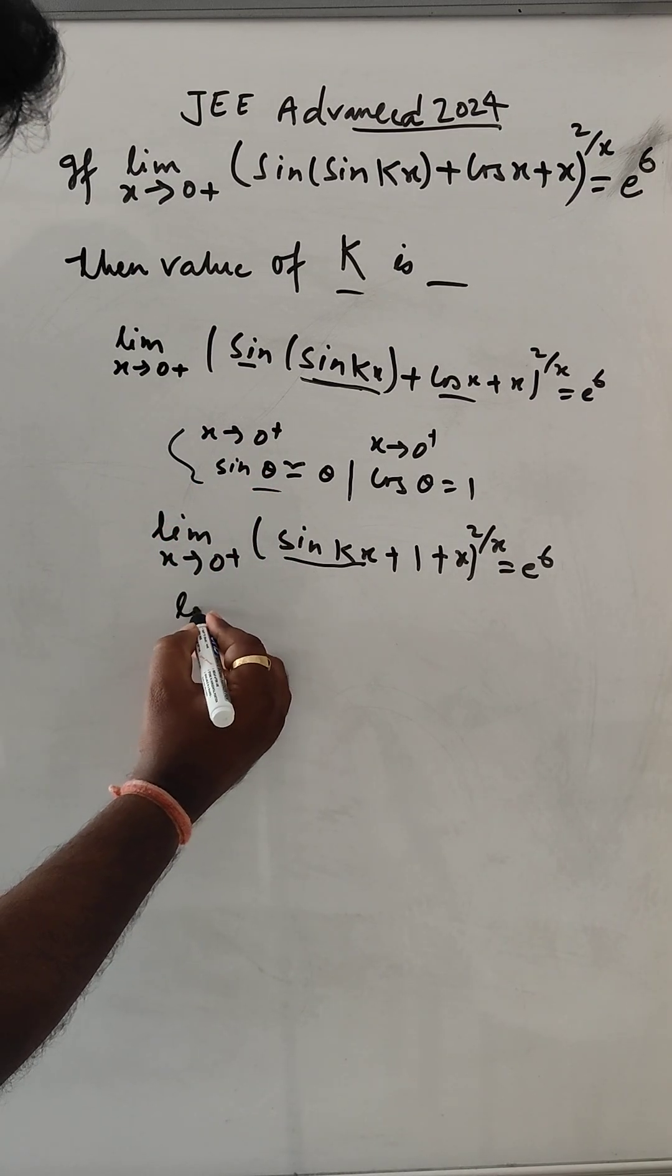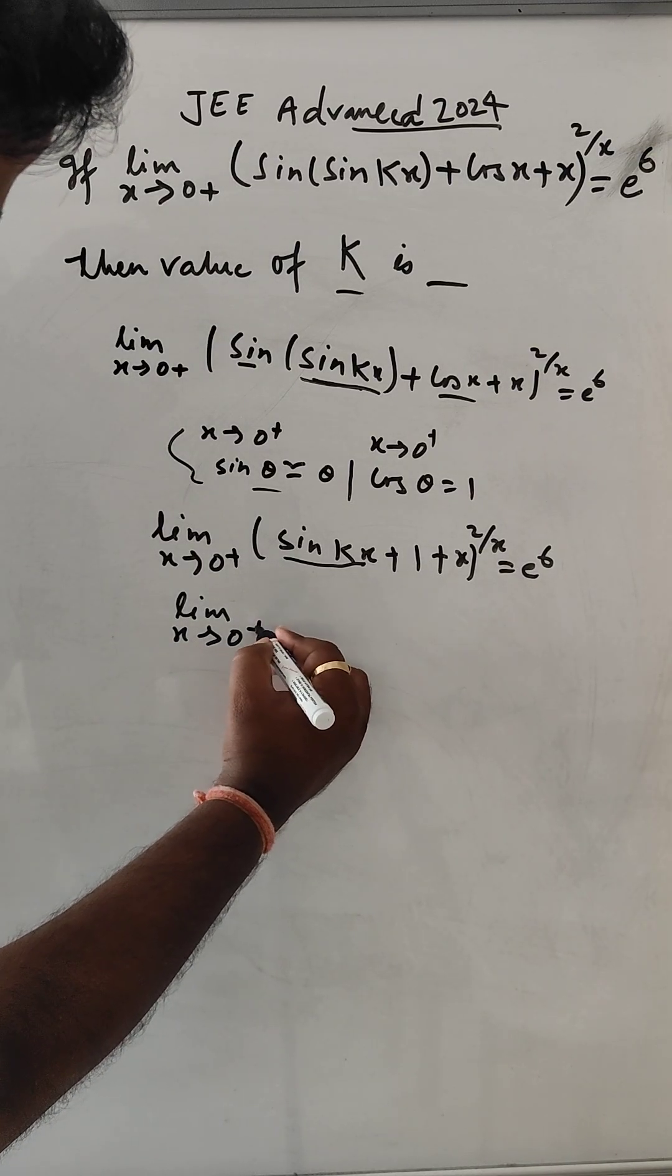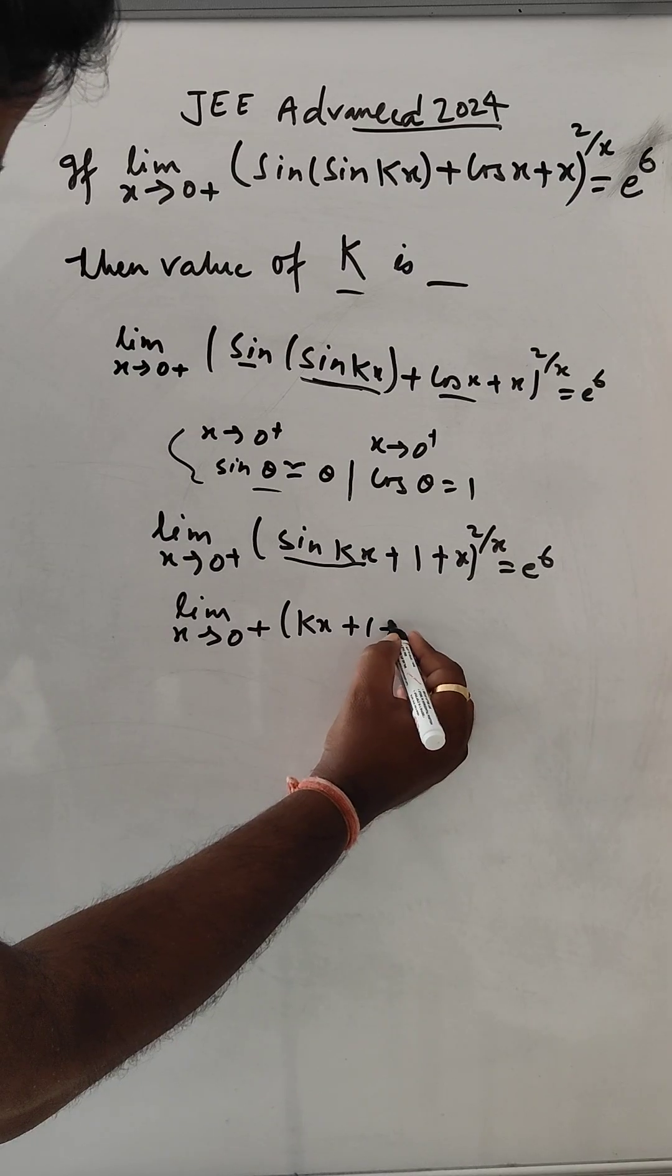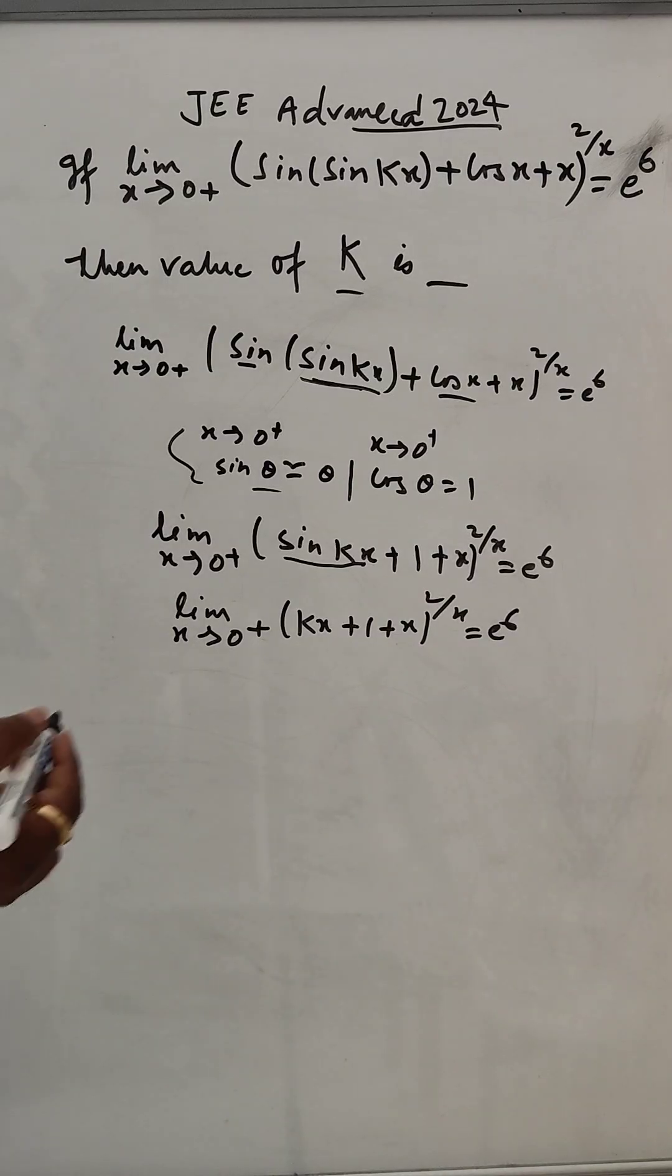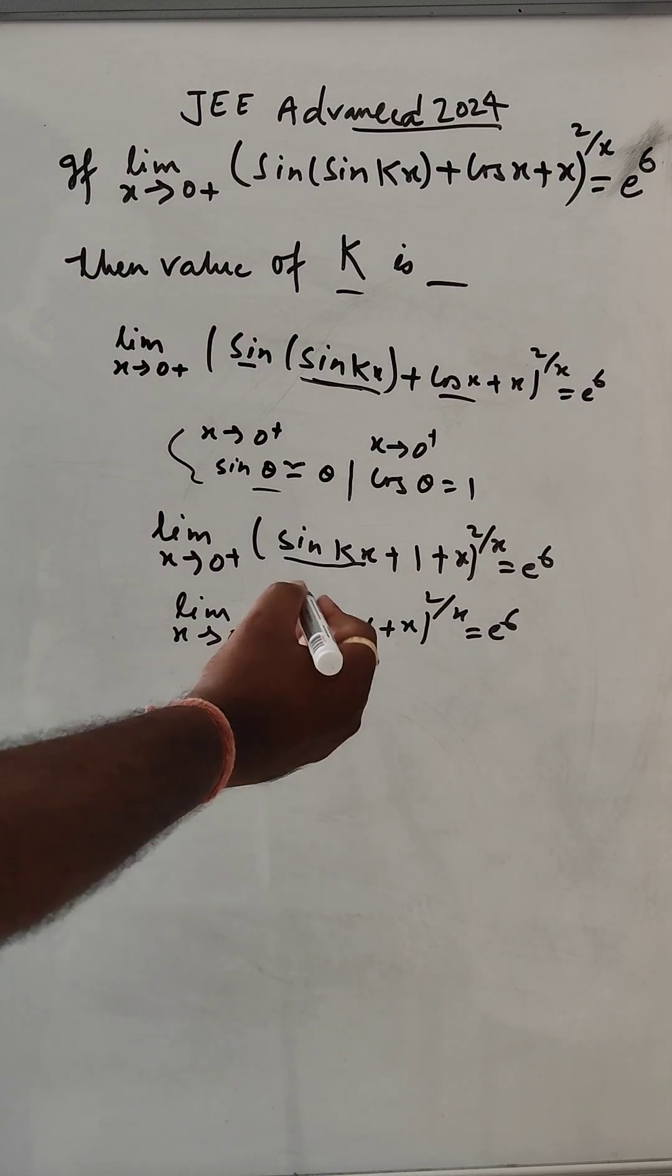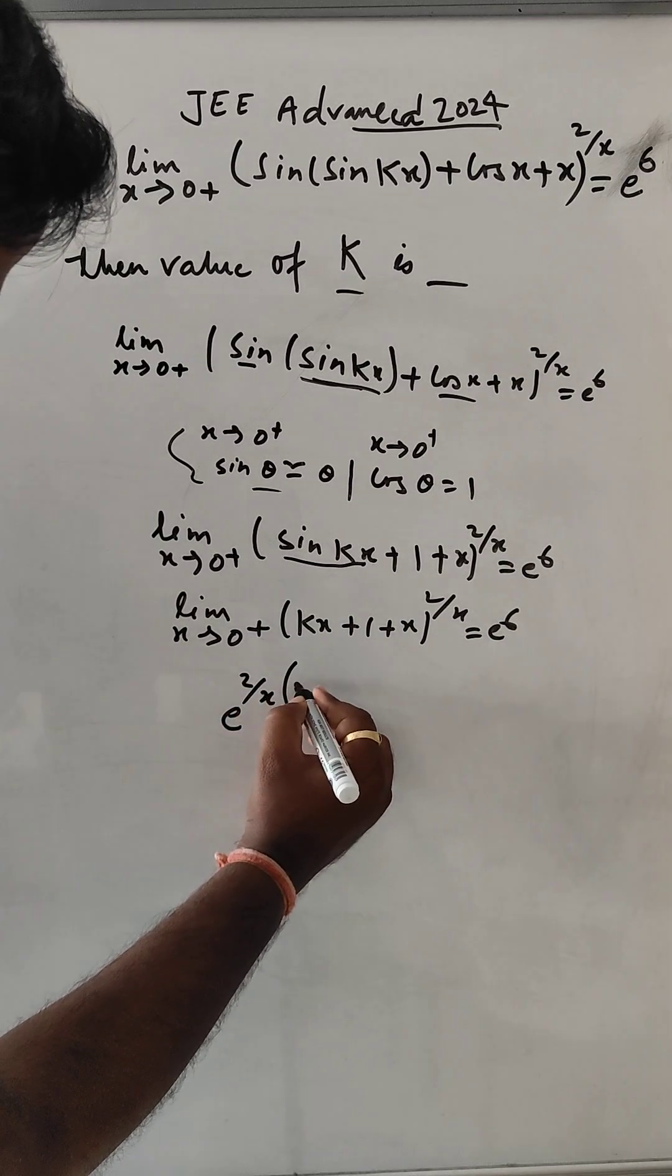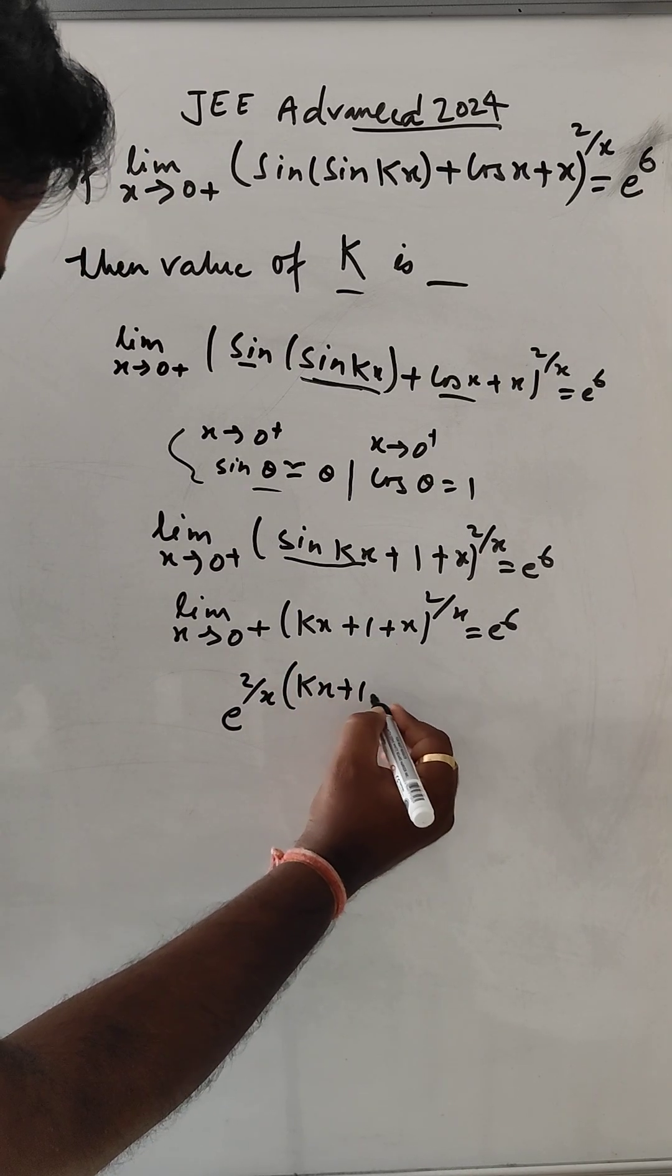So limit x tends to 0: (kx + kx + 1 + x) to the power x equals e^6. Now if we put the value 0 here, it is infinity, so in that case it will be like e to the power [x(whatever is here minus 1)].